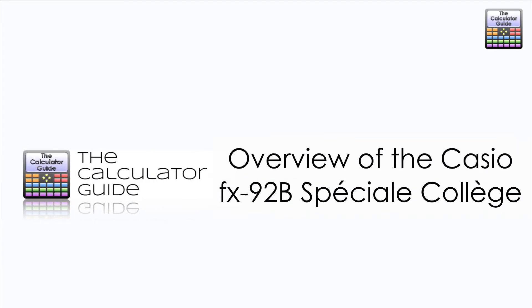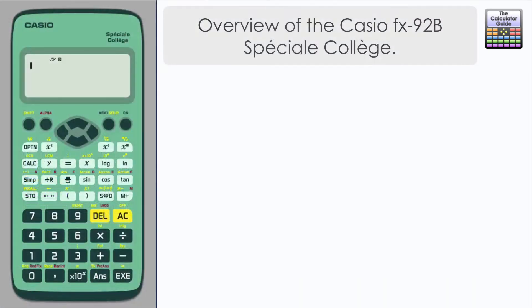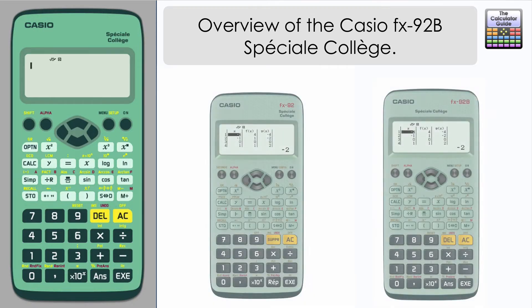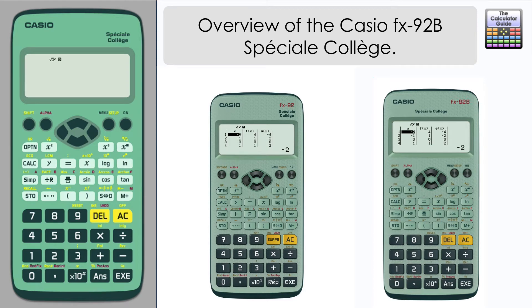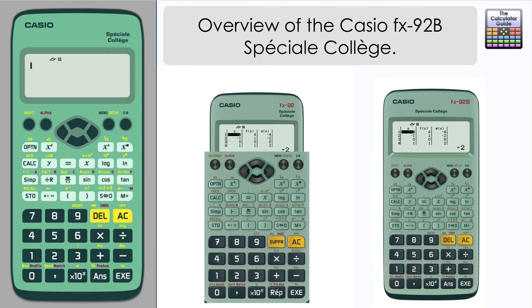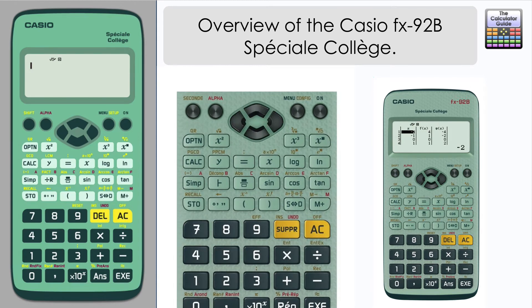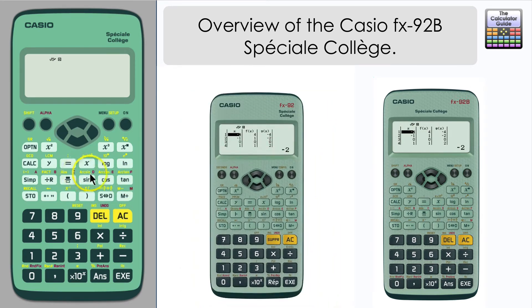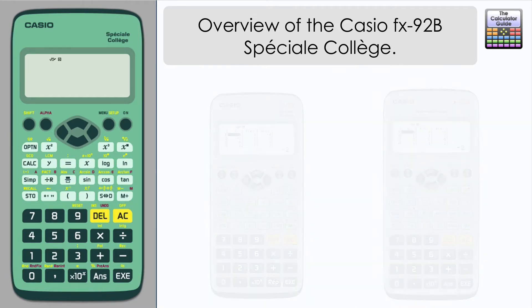Hello and welcome to the Calculator Guide video on the overview of the Casio FX92B. The FX92B is a recent calculator which incorporates some features similar to that of the Casio ClassWiz. It appears to be available in France — the FX92 is a French version where the decals and buttons are written in French rather than English, while the 92B has English descriptions on each of the buttons. This is just going to be a brief overview of some of the features of this calculator.